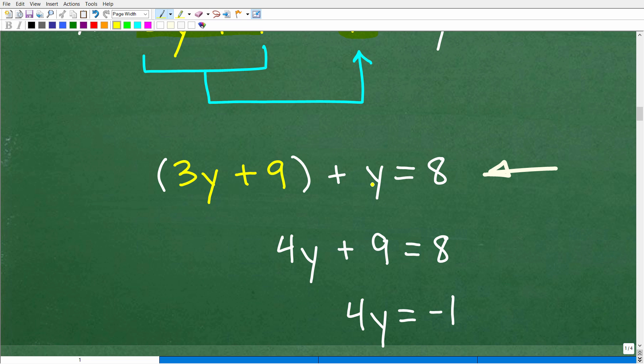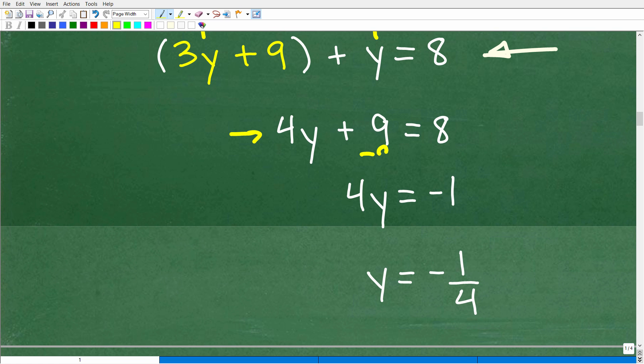So at this point, all we need to do is solve this one variable linear equation. OK, so 3y plus 9 plus y. So I can combine these y's here. These are like terms. So 3y and y, that's 4y plus 9 is equal to 8. So I'm going to go ahead and subtract 9 from both sides of the equation. Hopefully, this is basic algebra. I have 4y is equal to negative 1. So solving for y, Y is equal to negative 1 fourth.